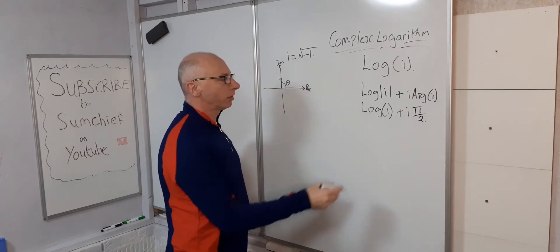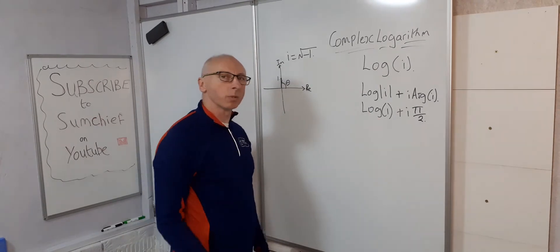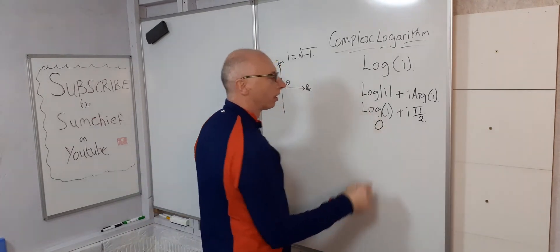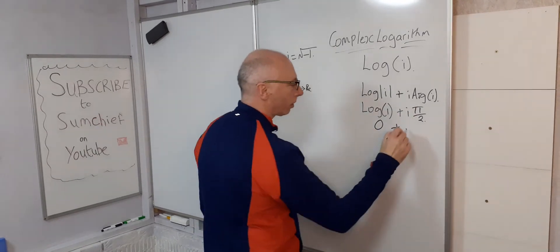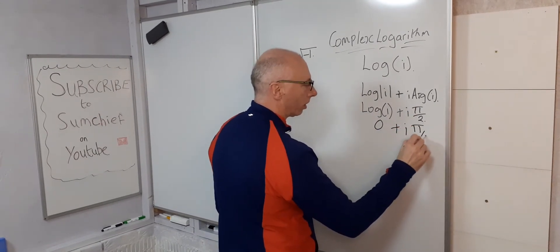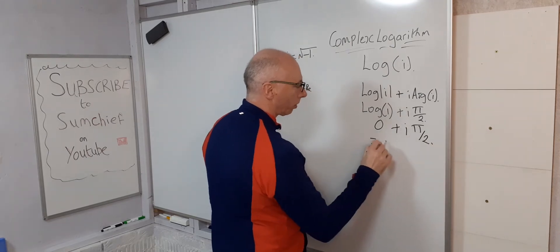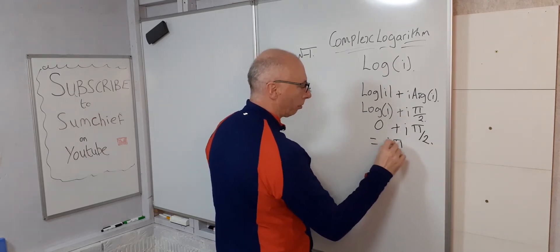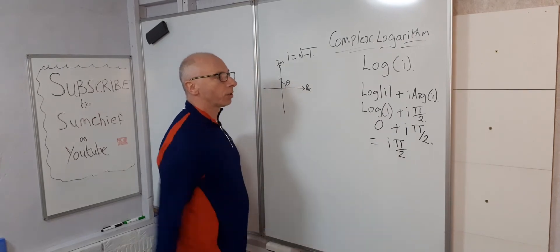So break this down. Log of one, as we know, that is zero plus i pi over 2. Okay, which equals i pi over 2. And that's the solution.